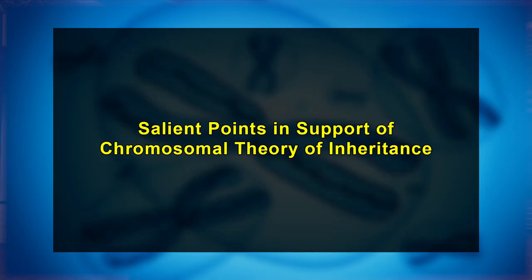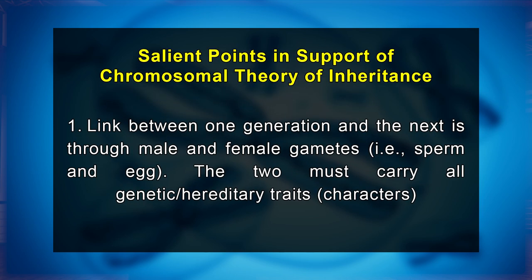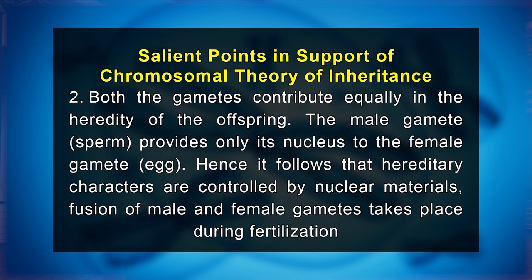Salient features in support of chromosomal theory of inheritance include that the link between one generation and the next is through male and female gametes — that is, sperms and eggs. The two must carry all genetic hereditary traits or characters. Both gametes contribute equally in the heredity of the offspring. The male gamete, that is sperm, provides only its nucleus to the female gamete, that is the egg. Hence, it follows that hereditary characters are controlled by nuclear materials.